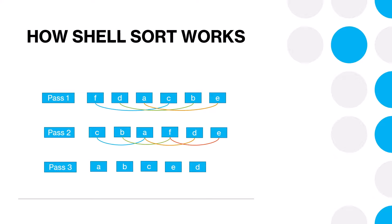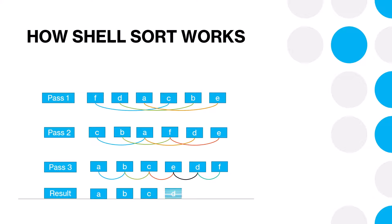A and C are swapped and then E and F are swapped. Now we reduce the gap to 1, which means we check adjacent elements: A and B, B and C, C and E, E and D, D and F. Just D and E will be swapped, which means we now have our sorted data.